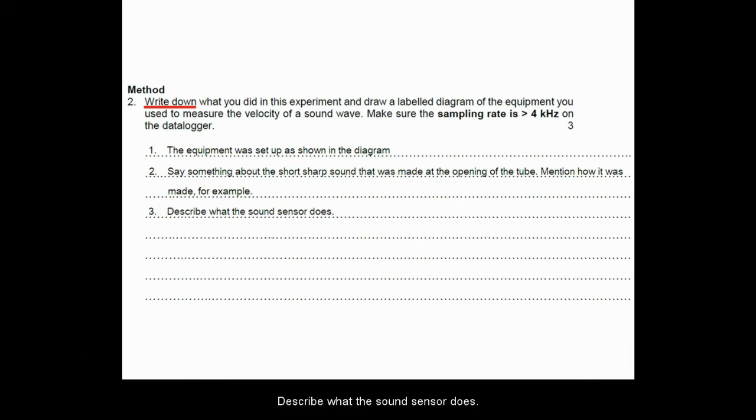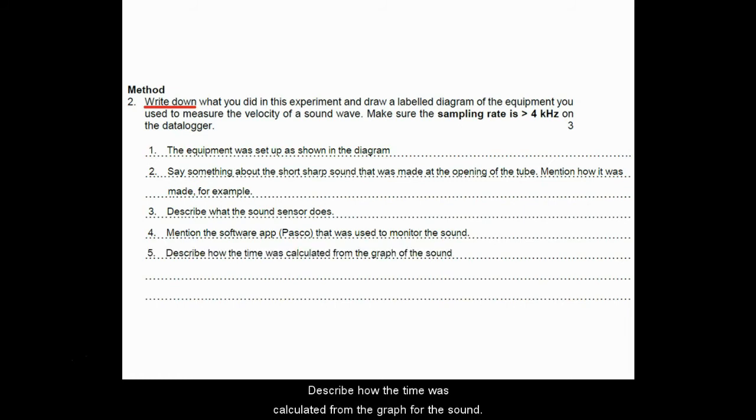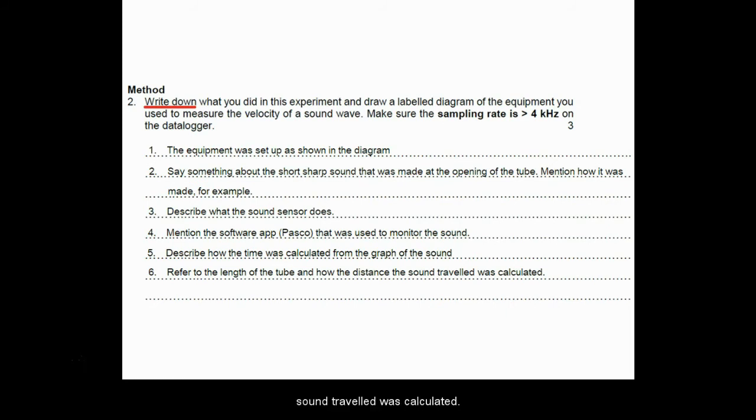Describe what the sound sensor does. Mention the software, the PASCO software that was used to monitor the sound. The importance of doing that is that when you are writing a method, you are writing it so that somebody else somewhere else in the world can repeat your experiment. So if you have been using a particular app, PASCO for this task, then you should mention that. Just don't say a computer was used. Describe how the time was calculated from the graph of the sound. Refer to the length of the tube and how the distance the sound traveled was calculated. Explain how the data that has now been collected was used to actually determine the velocity.